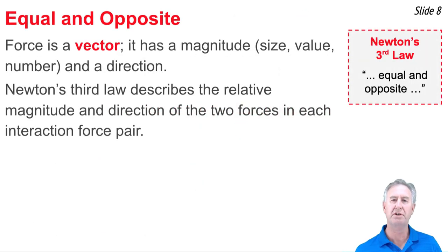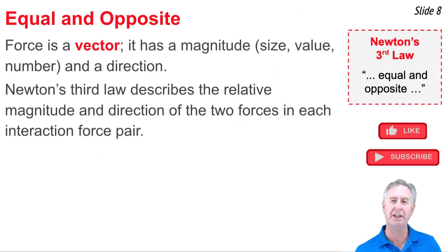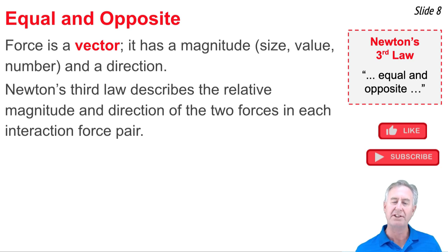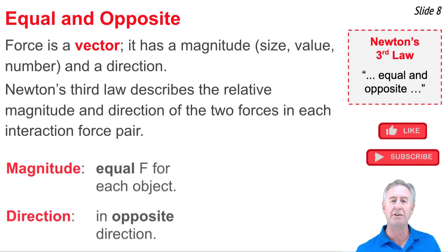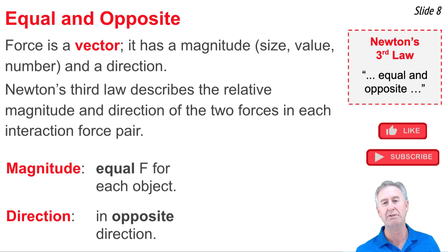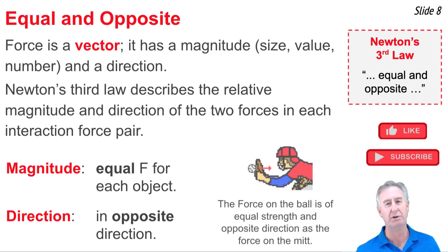Newton's Third Law describes the individual forces in an interaction force pair as being equal and opposite. Force is a vector — it has a magnitude, a numerical value, and a direction. Newton's Third Law describes both the magnitude and direction of these two individual forces. As for magnitude, both forces are equal on both objects. As for direction, they act in opposite directions on the two objects.